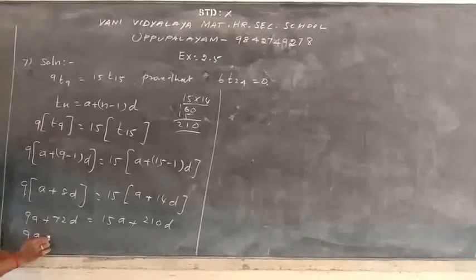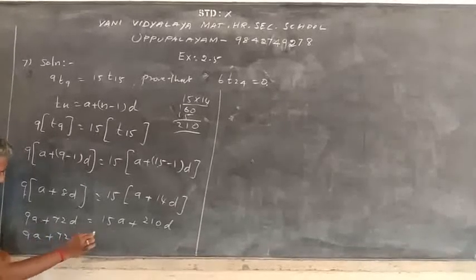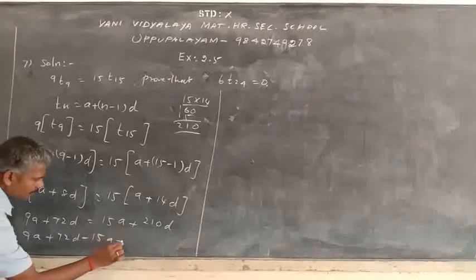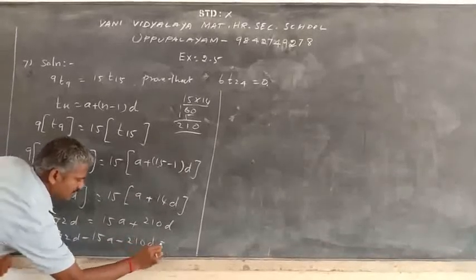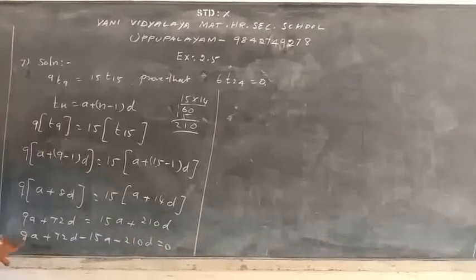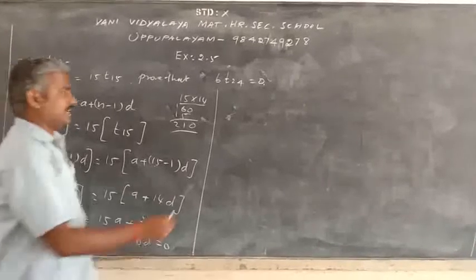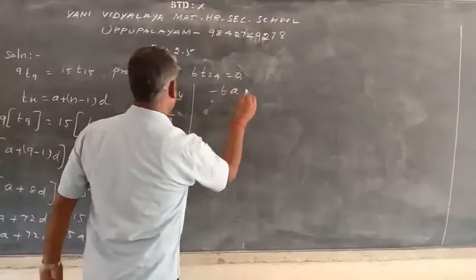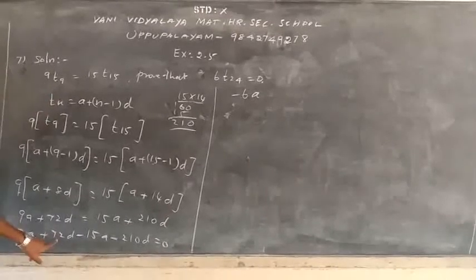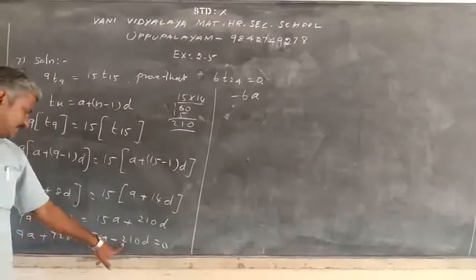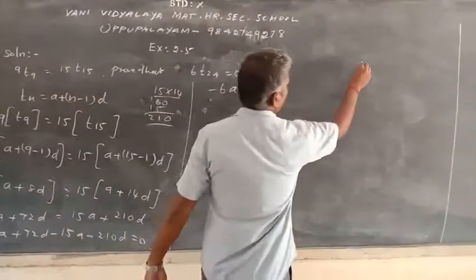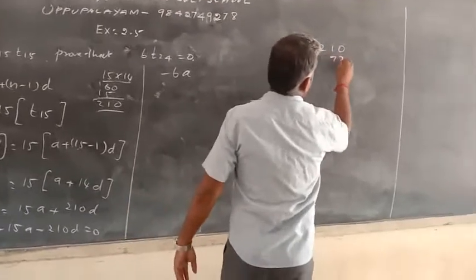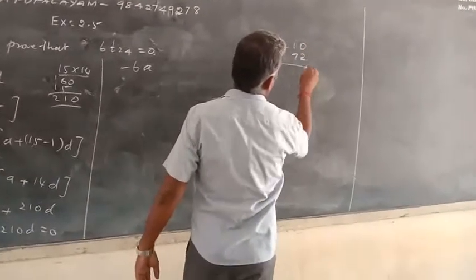9A plus 72D minus 15A minus 210D is equal to 0. So 9A minus 5A, minus 6A. This one 72D minus 210. So 210, 72. 10, 10 minus 2, 8.